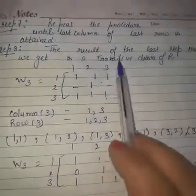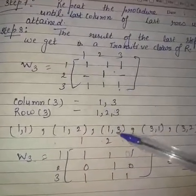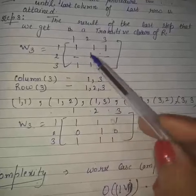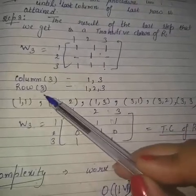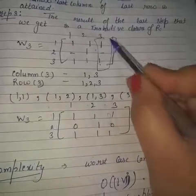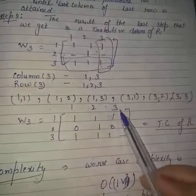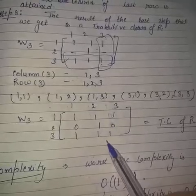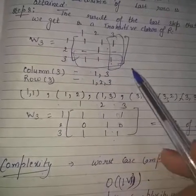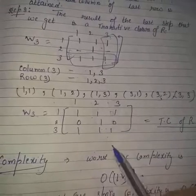We repeat the procedure until the last column and last row is reached — checking for all rows and columns whether any new relation exists. For W3: copy the ones as-is, check column 3 and row 3, find the positions of ones, find relations, and assign 1 wherever a new relation is found; otherwise assign 0. After all three columns and rows are complete, any remaining blanks are assigned 0. The final matrix obtained is the transitive closure of the given relation.